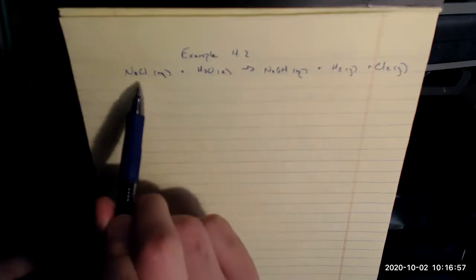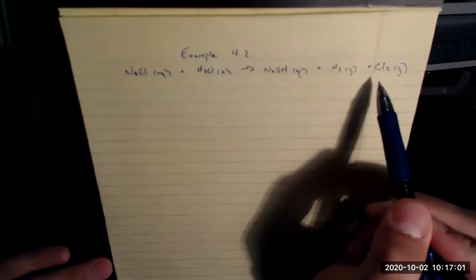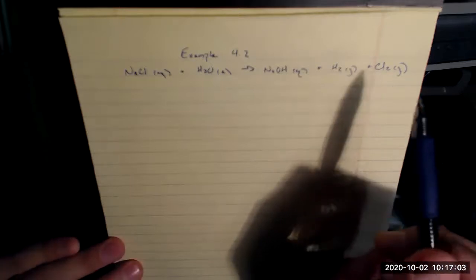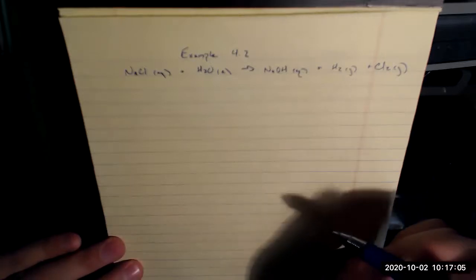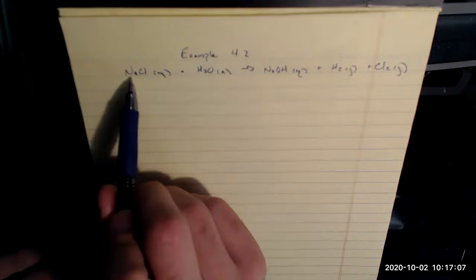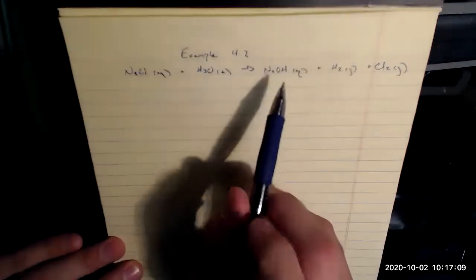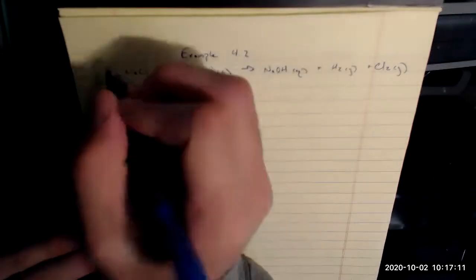Notice, for example, there's only one chlorine on the reactant side and two over here. So I need to balance by inspection before I write the net ionic equation. Let's look at sodium: one and one, that's good. But chlorine, I mentioned, is not.